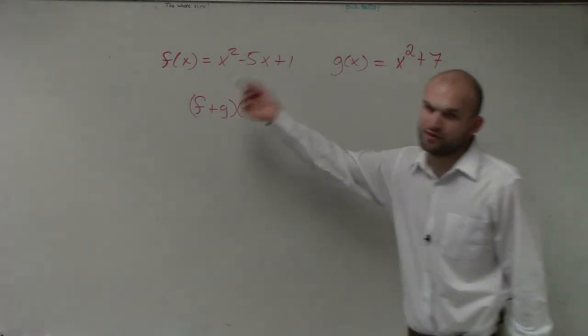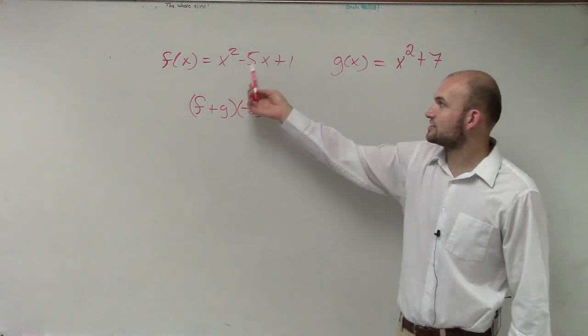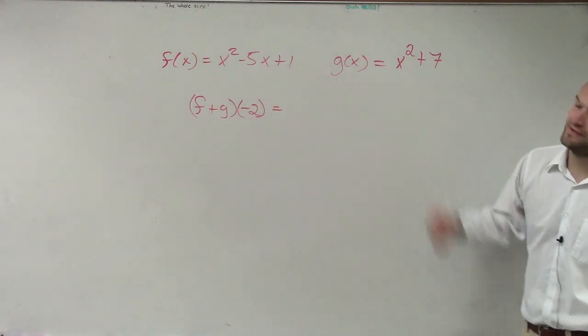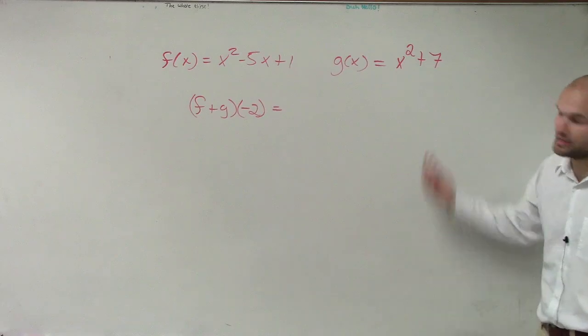Ladies and gentlemen, the problem we have here is I've given you two functions: f(x) = x² - 5x + 1, and g(x) = x² + 7.